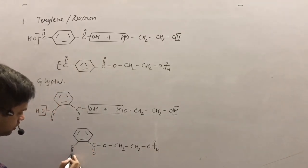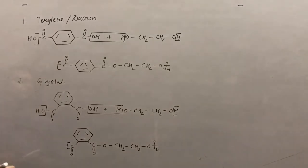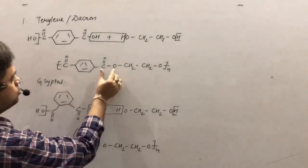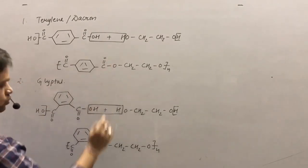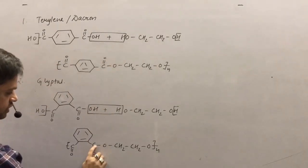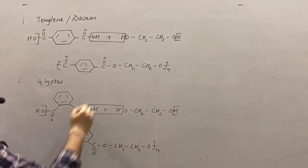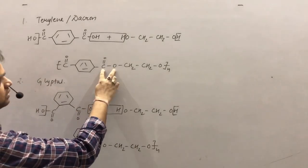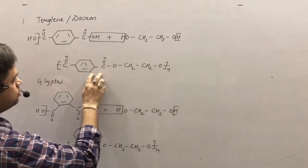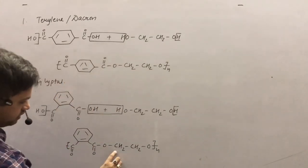In both the structures, the common repeating unit is COO — the ester part — having carbon chains on both sides.